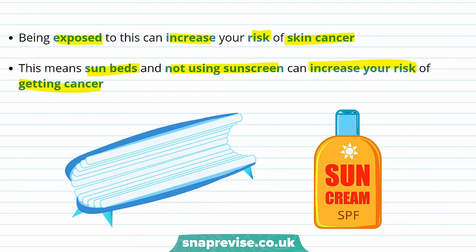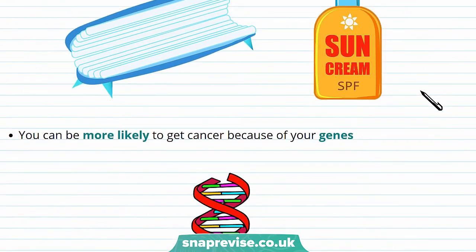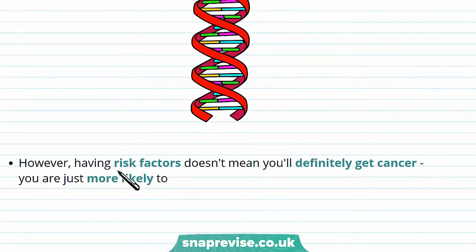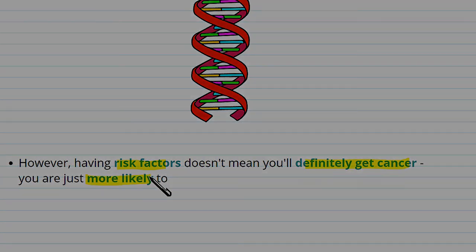Getting cancer may not be due to how you live your life. You can also be more likely to get cancer because of your genes — you inherit your genes from your parents, but some of these genes may be faulty, and that can cause cancer. Remember that having risk factors doesn't mean you'll definitely get cancer; you are just more likely.